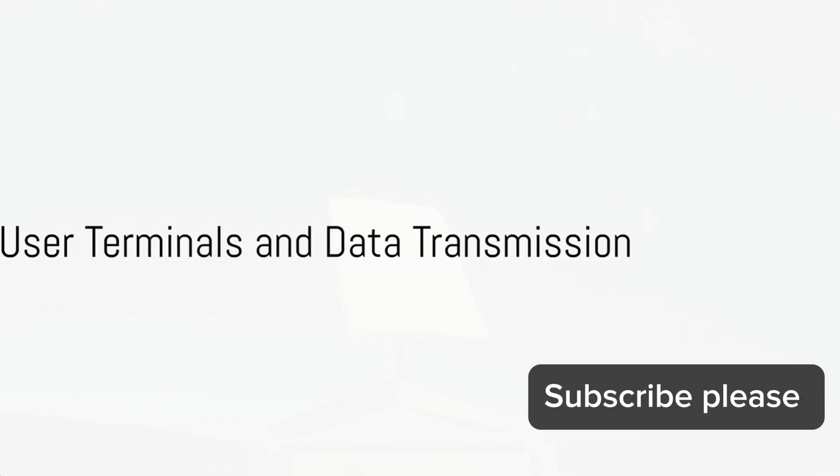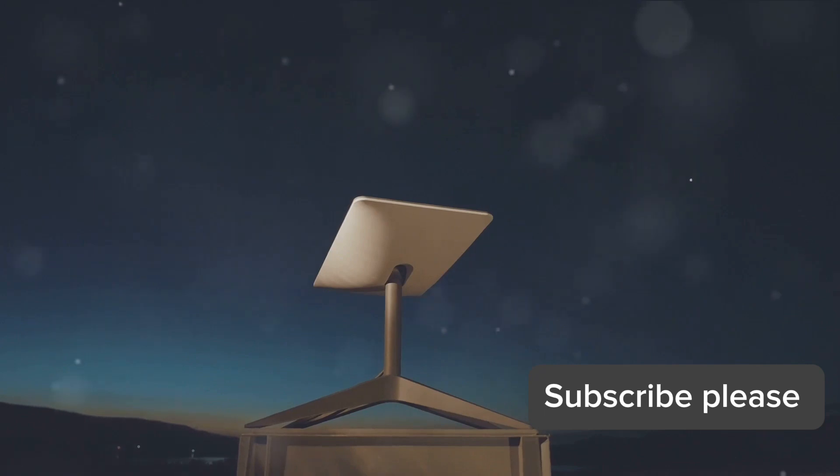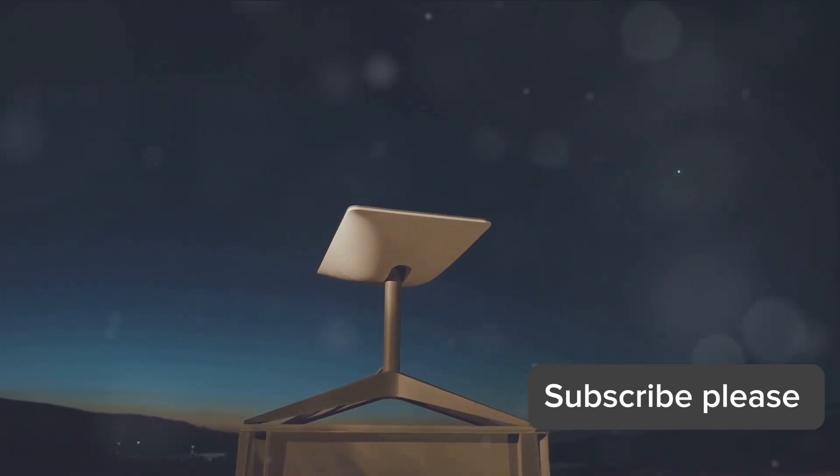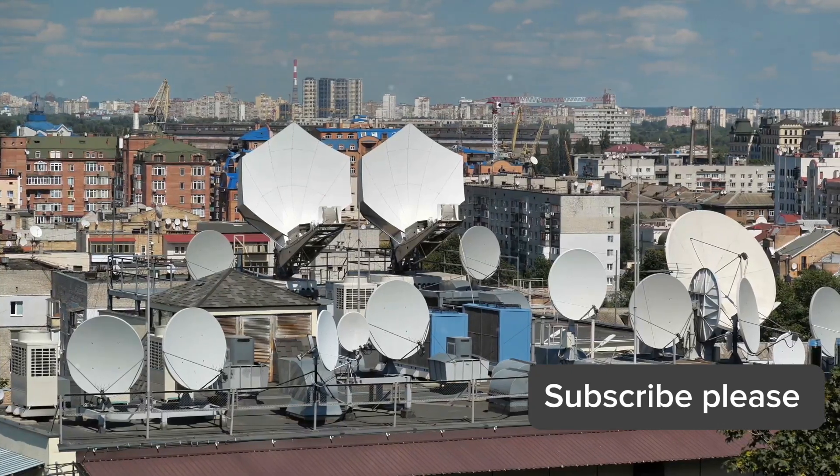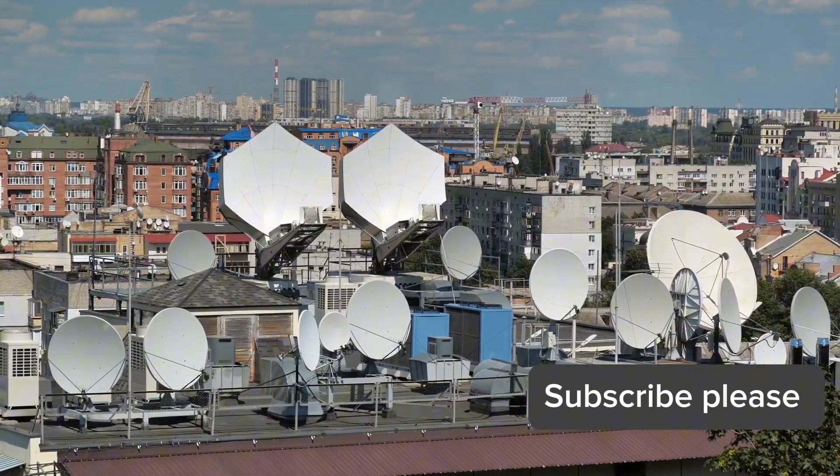With the ground stations connecting the satellites to the internet backbone, how does this data reach you, the user? The user terminals or satellite dishes are the gateways to this space-age internet connectivity. These are not your typical television dishes. Instead, they are sophisticated phased array antennas installed at your homes or businesses, acting as your personal liaison to the Starlink satellite constellation.